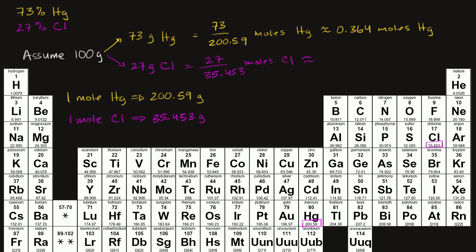get our calculator out, 27 divided by 35.453 is equal to 0.762.